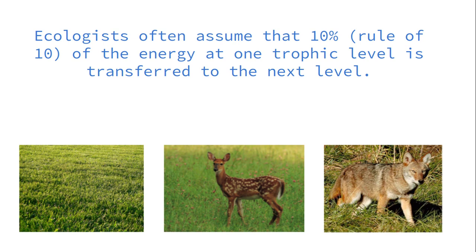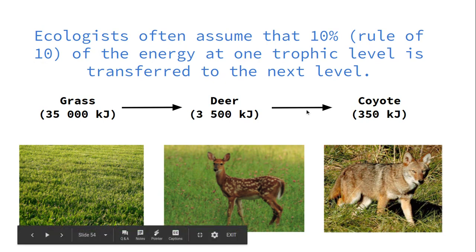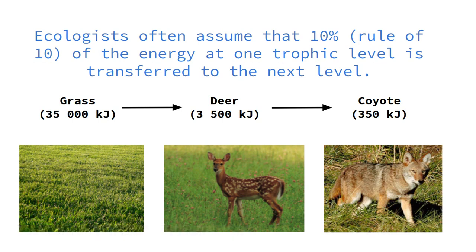We call this the rule of 10% — we take the average and say about 10% is passed through a food chain. So if the grass is 35,000 kilojoules, only 10% of that — 3,500 kilojoules — is available to the deer. Only 10% of that — 350 kilojoules — is available to the coyote. That is why higher trophic levels like tertiary or quaternary consumers have to eat so much food, because they gain so little energy — it's being lost to all the things animals need to do.